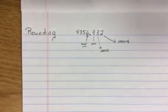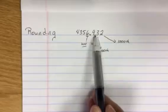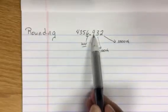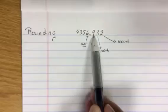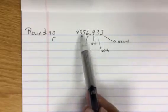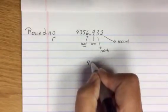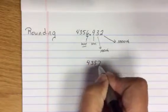Now when we round, if I was to say round to the nearest unit, we look at the unit spot, but we look at the number to the right of it. If the number to the right of it is five or larger, this rounds up. So if we were rounding to the nearest unit, the answer would be 4357.